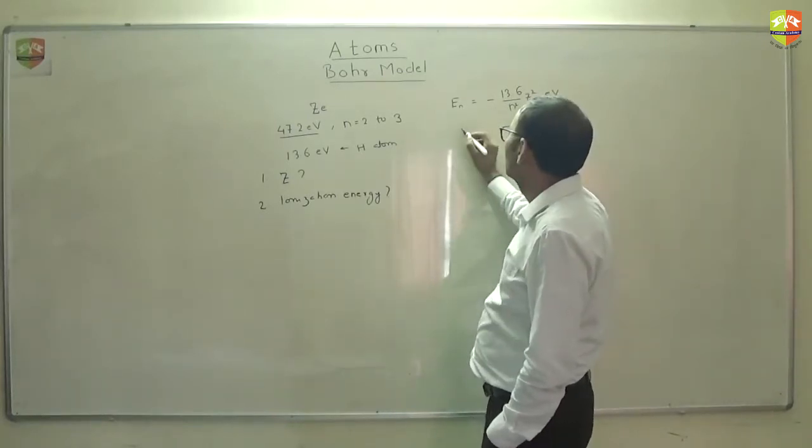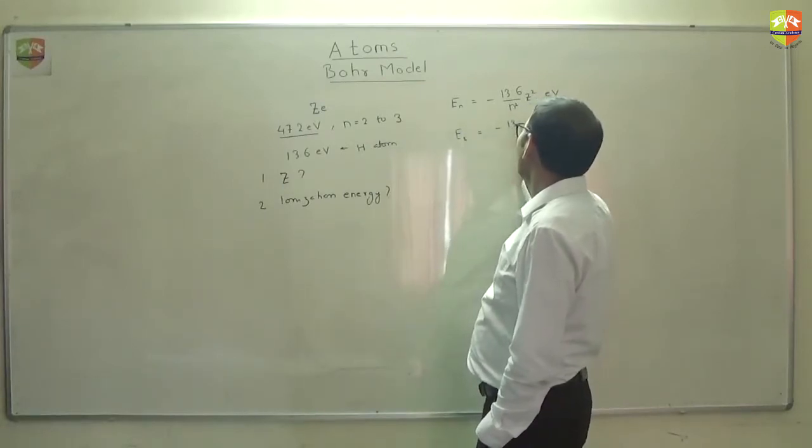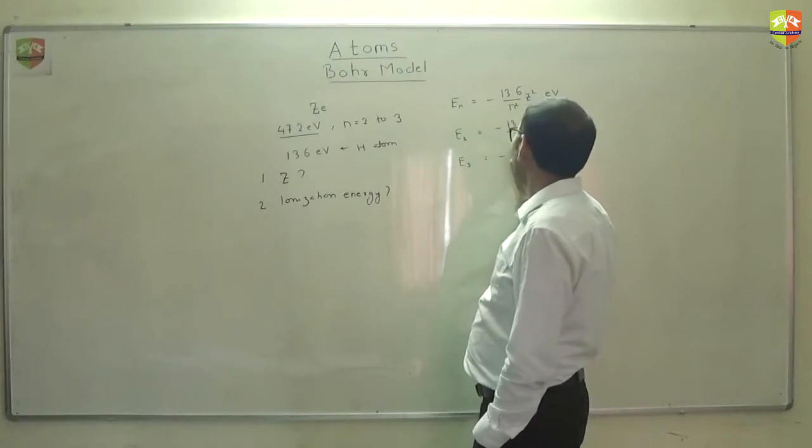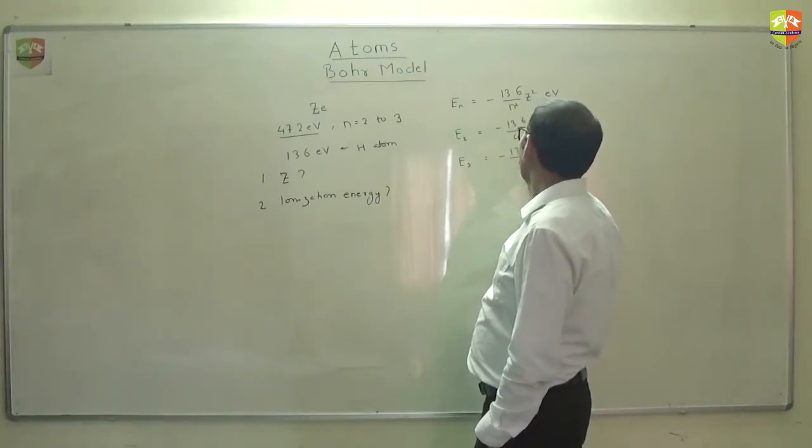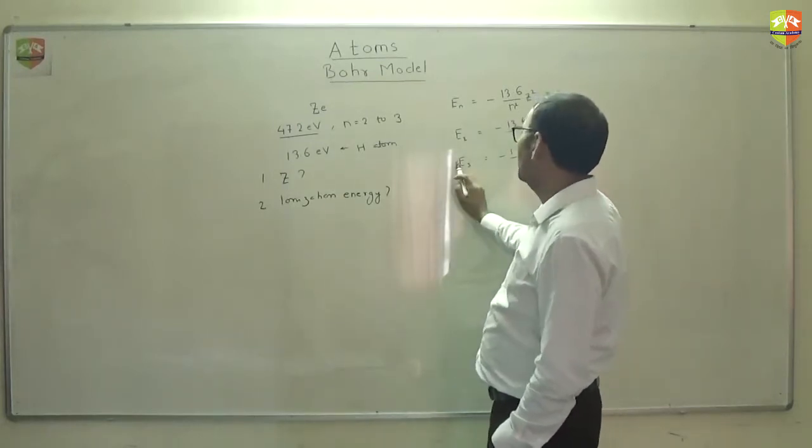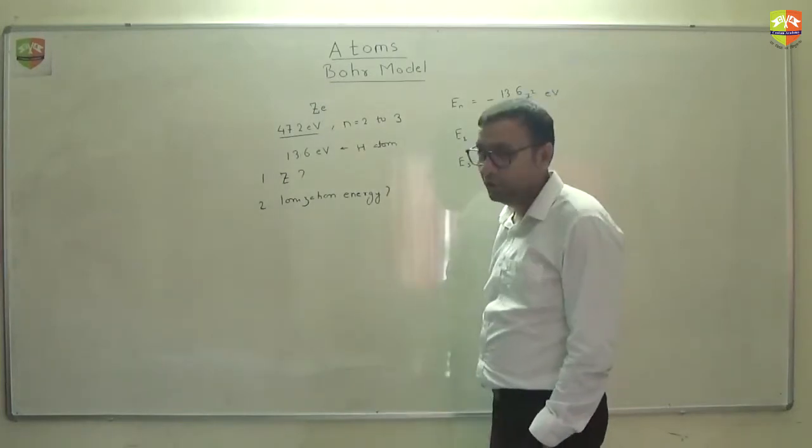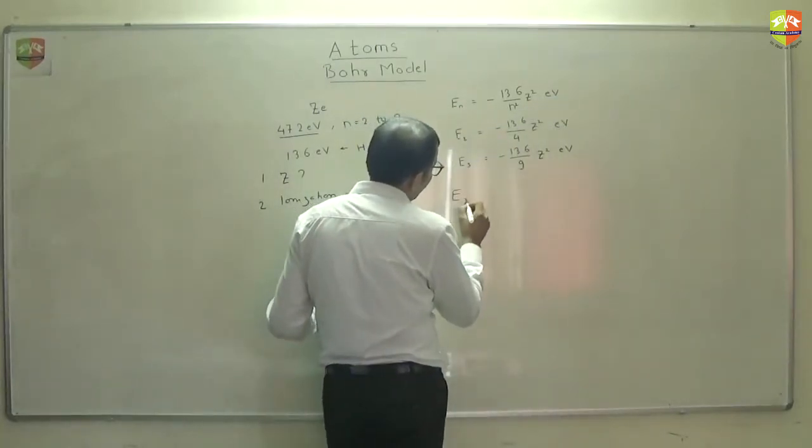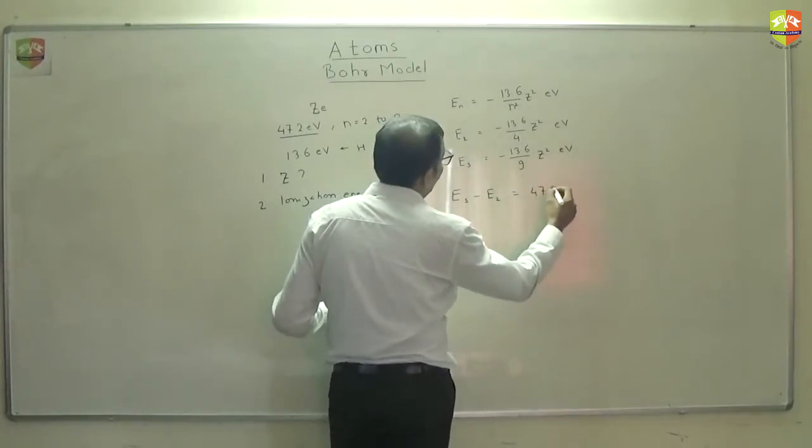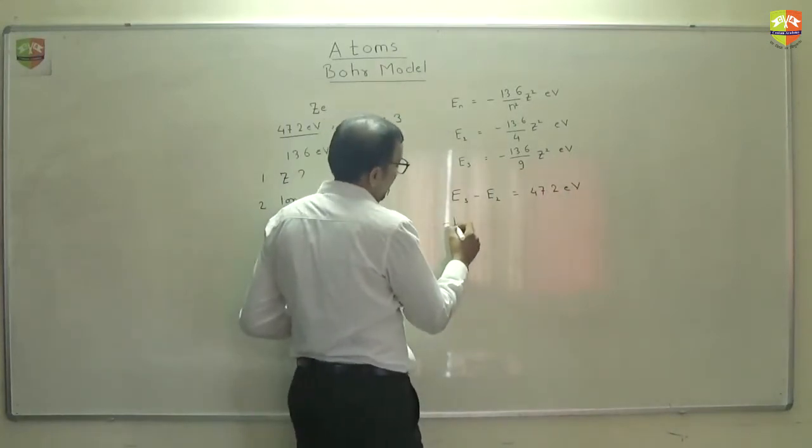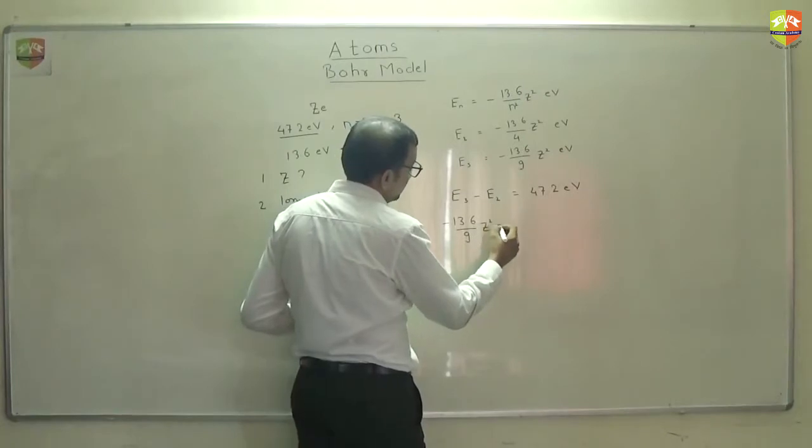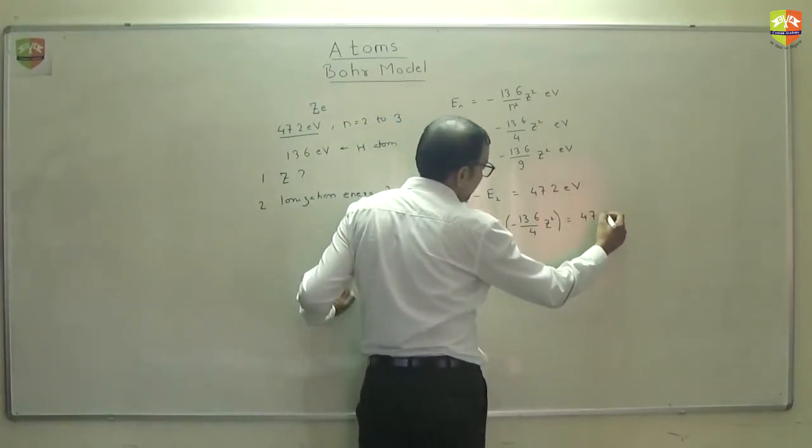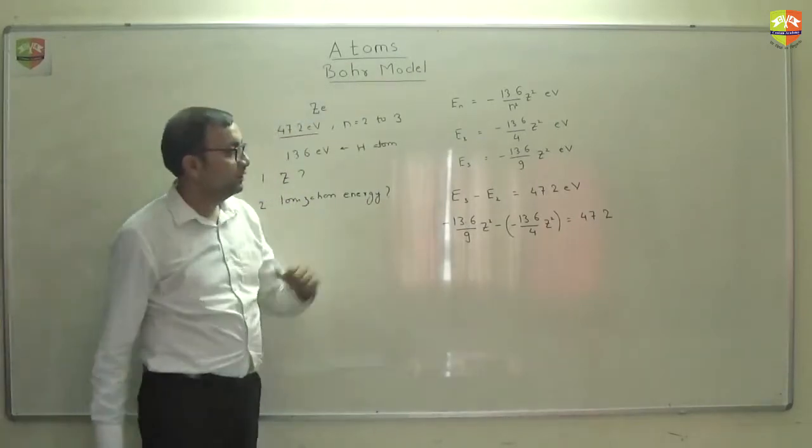Energy in the second orbit, how much that will be? 13.6 by 4 Z square. Energy in third orbit will be 13.6 divided by 9 Z square. This minus that should be equal to 47.2, isn't it? Both are in electron volts only, so I do not need to convert in joules. So E3 minus E2 should give me 47.2 electron volt. That is minus of 13.6 by 9 Z square minus of minus 13.6 by 4 Z square is equal to 47.2.